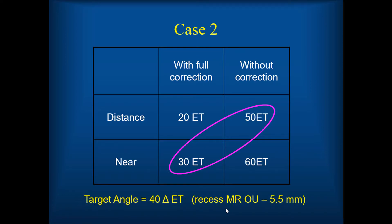Now let's look at the same child but when we take off the glasses, we get very different measurements — a lot more accommodative convergence. Without correction: 50 prism diopters at distance and 60 at near. Then our target becomes the average of near with correction (40) and distance without correction (50), giving 40 prism diopters. So my surgical dose is going to be 5.5 millimeters. The patient would look exactly the same when they walk in your office with glasses on, but require very different doses of surgery.